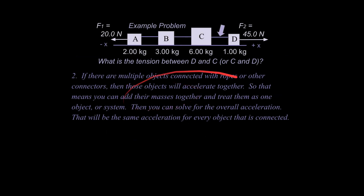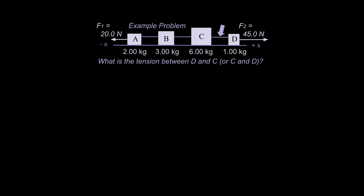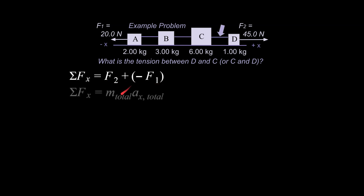Since multiple objects accelerate together, we treat this as one entire system — like one object. We know both external forces, so we apply the sum of forces strategy to the entire system. The first step is to state the sum of the forces literally, and the second line is Newton's Second Law, using total mass for the whole system to find the overall acceleration.